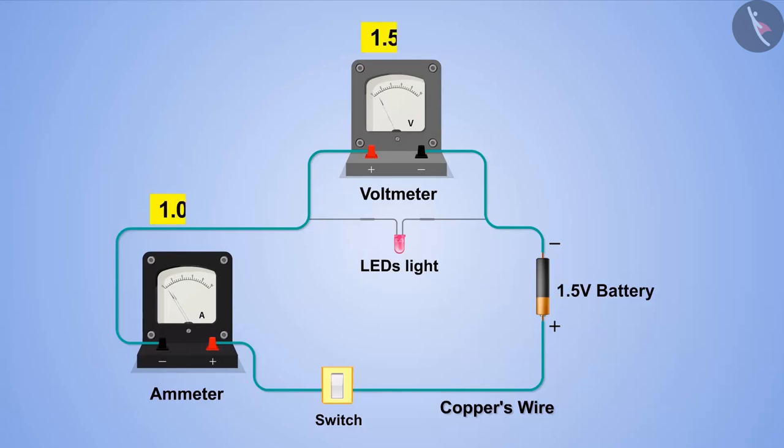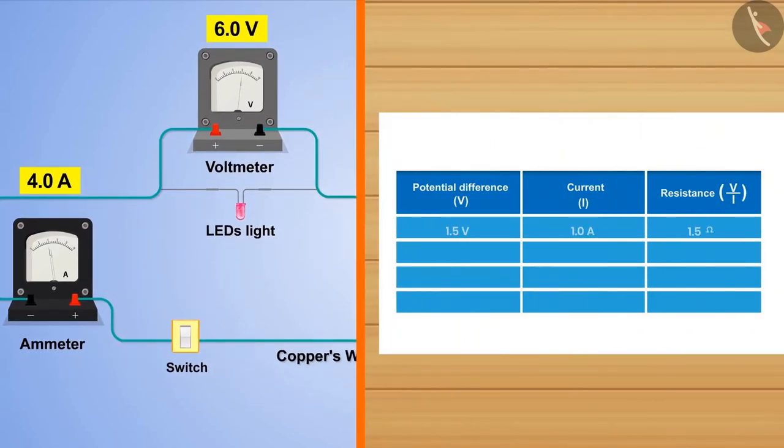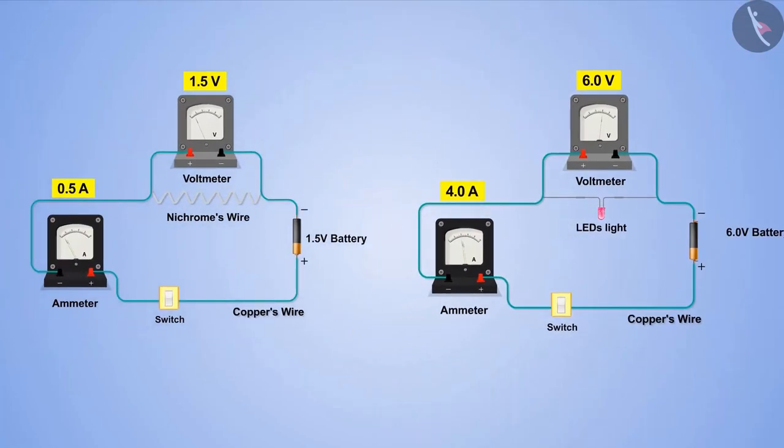Here the value of electric current has changed due to LED light. So through both these activities we can say that the value of resistance changes when the resistor gets changed.